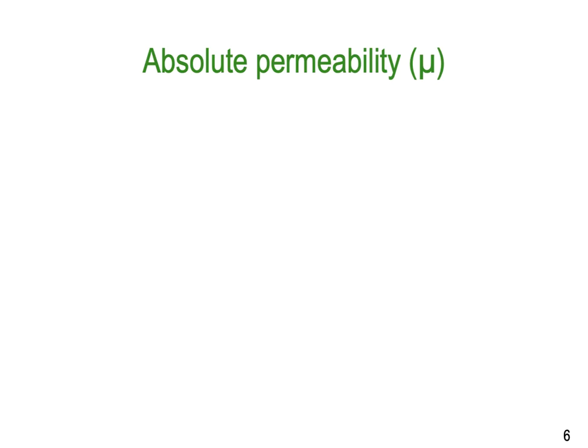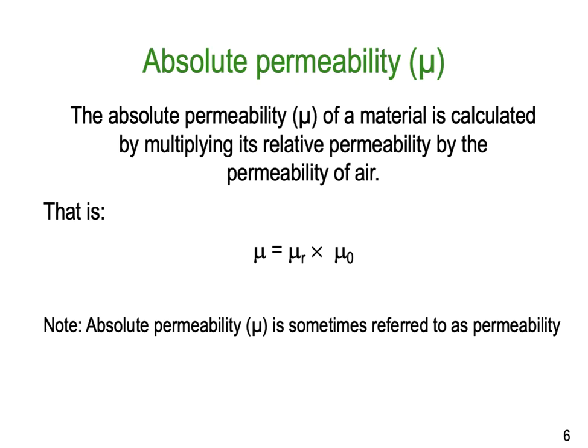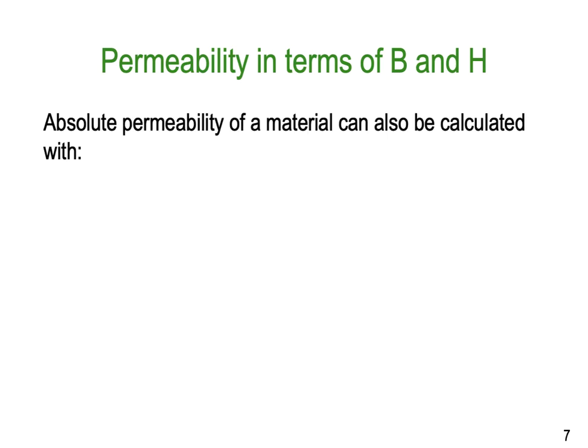So, what's absolute permeability? Just mu by itself. The absolute permeability mu of a material is calculated by multiplying its relative permeability by the permeability of air. So that is: mu equals mu relative multiplied by mu absolute. Note that absolute permeability is sometimes referred to as just straight permeability. Whenever we use the word permeability or the symbol mu by itself, we mean the absolute permeability of a particular material, and most of the time you're going to be given those values. Absolute permeability of a material can also be calculated as B divided by H.